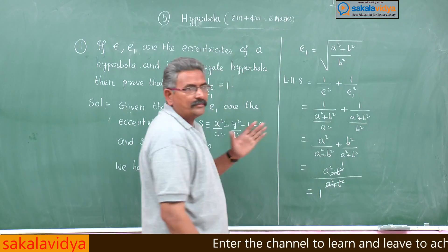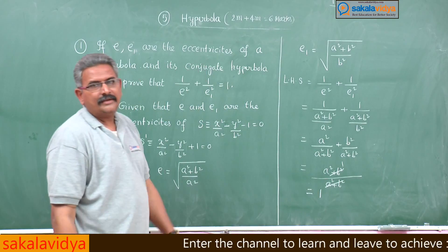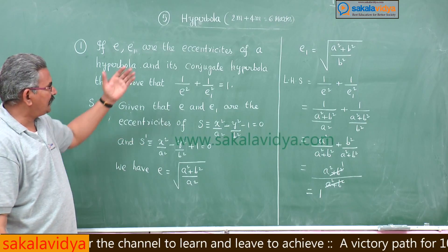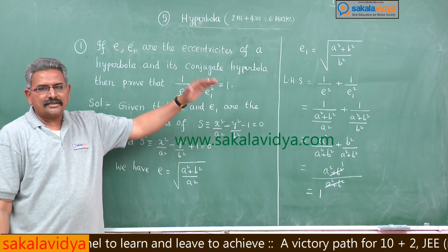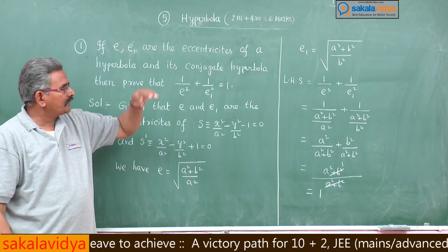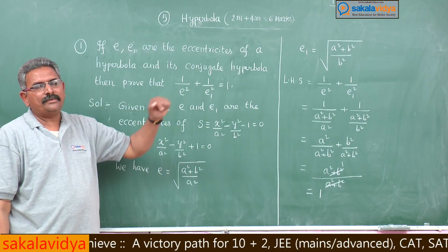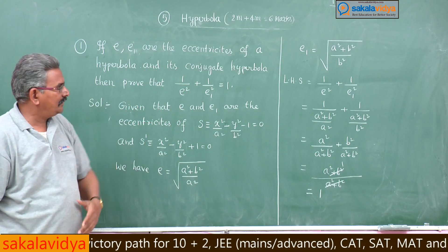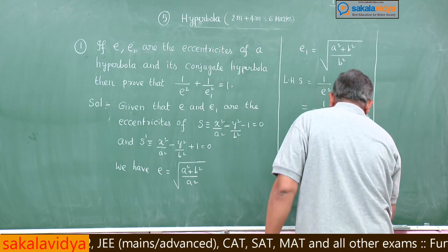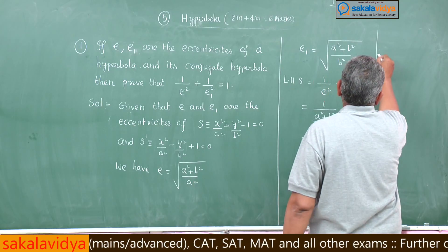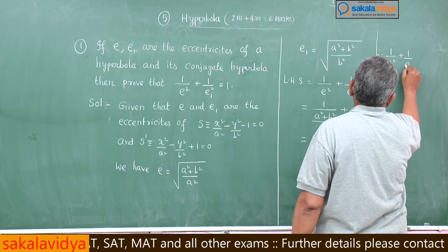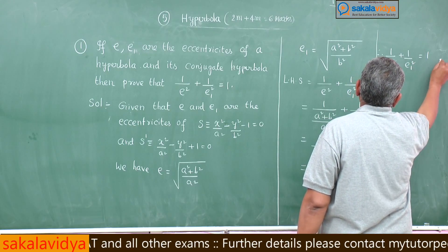Both numerator and denominator are the same, so they cancel and we get 1. Therefore, if E and E₁ are the eccentricities of a hyperbola and its conjugate hyperbola, then 1/E² + 1/E₁² = 1. That has been proved.